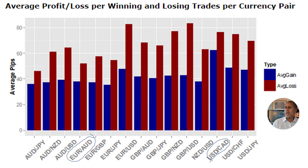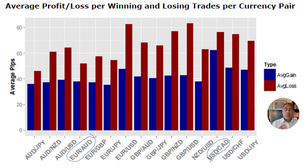So why would it be the case that if you take an extreme example like Australian dollar, Japanese yen, in comparison to, let's say, cable — which is sterling US dollar — the gap is much narrower? I've got a theory, and my favorite currency pairs are based on this theory, which is I prefer trading major versus minor currencies or minor versus minor currencies.